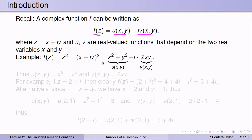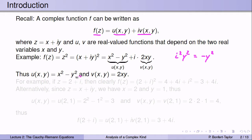Let's look at an example. Suppose f is the function z squared. With z being x plus iy, that becomes x plus iy quantity squared. Multiplying through: x squared plus 2xy i plus i squared y squared, which is minus y squared. Collecting real terms gives u of xy equals x squared minus y squared, and the imaginary part gives v of xy equals 2xy.